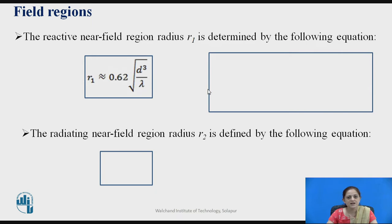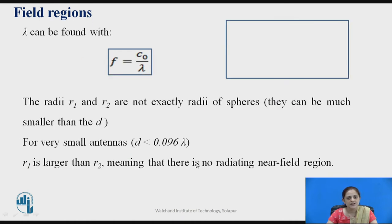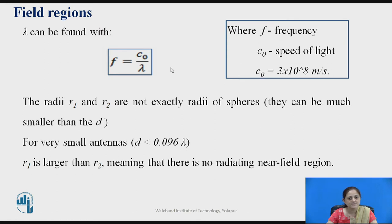The near field and far field regions are defined with different radii denoted R1 and R2. R1 is given by the equation 0.62 times the square root of D³ divided by λ, where D is the maximum dimension of the antenna and λ is the wavelength. The radiating near field region has radius R2 defined by 2D² divided by λ. The wavelength λ can be calculated as C₀ divided by frequency, where C₀ is the speed of light, 3 × 10⁸ m/s. R1 and R2 are not exact radii of a sphere — they are approximations representing boundaries between field regions.